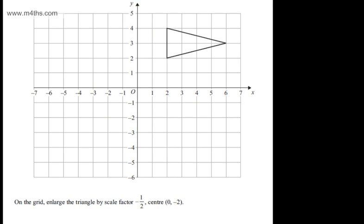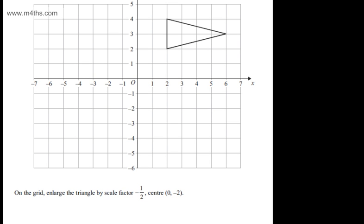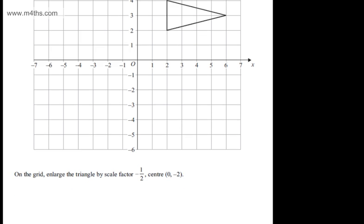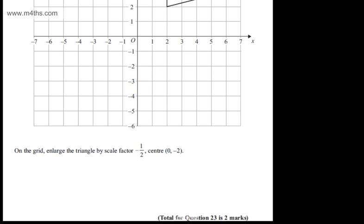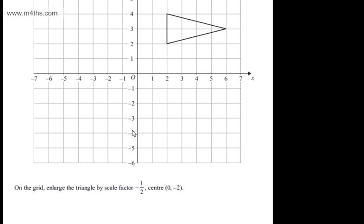This is question number 23. It says, on the grid, enlarge the triangle by a scale factor of minus one half, center zero comma minus two. The question carries two marks. So let's go ahead and locate zero comma minus two. That's going to be just here.